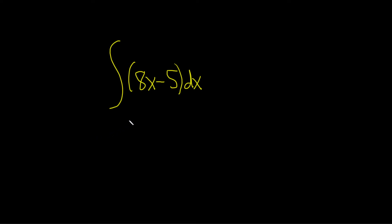In this problem, we're going to integrate 8x minus 5 with respect to x. So to do this, we'll just do each piece one at a time.